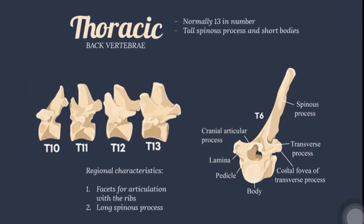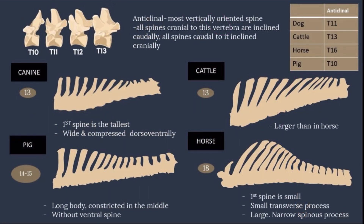The thoracic, or back, vertebrae are normally 13 in number and characterized by tall spinous process and short body. They articulate with the ribs through the costal fovea at the head of the rib, and the transverse fovea at the tubercle of the rib. In the thoracic region, there is an anticlinal vertebra — this is the vertebra with the most vertically oriented spine. All spines cranial to this vertebra are inclined caudally, and all spines caudal to it are inclined cranially.